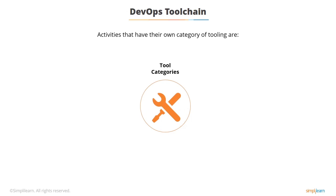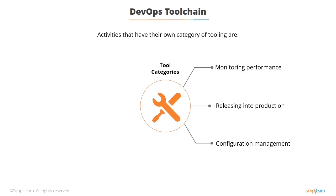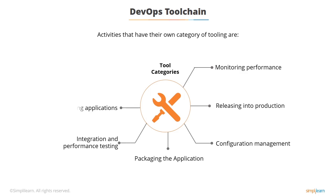There are a number of different categories of tools. Each category has its own range of tools which each do something similar but in a slightly different way. For example, we've got tools for monitoring, tools for releasing into production, configuration management, packaging the application, all sorts of testing — integration and performance testing — building the application, and initially starting with code development and unit testing. We'll be looking at the whole range of these tools from one end to the other.